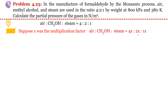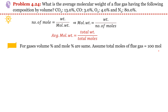For gases, volume percentage and mole percentage are the same. So we assume total moles of flue gas equals 100 mol. Moles of CO₂ = 13, moles of CO = 3, moles of O₂ = 4, and moles of N₂ = 80. Now we can write the weight of CO₂, which equals moles of CO₂ (13) multiplied by its molecular weight, giving 572 g. Similarly, weights of CO, O₂, and N₂ can be estimated.